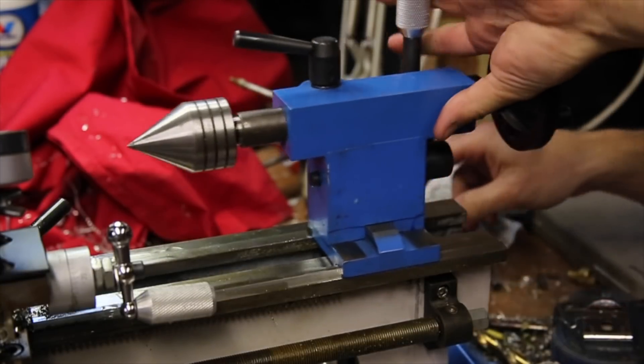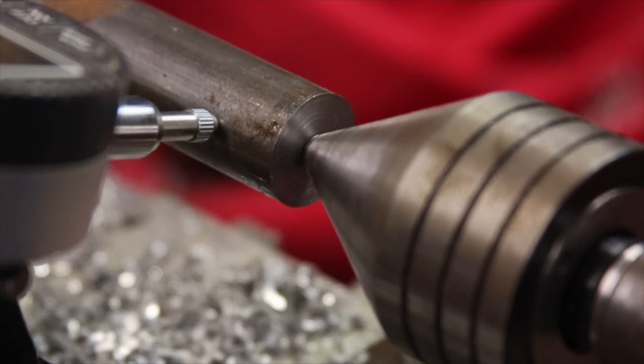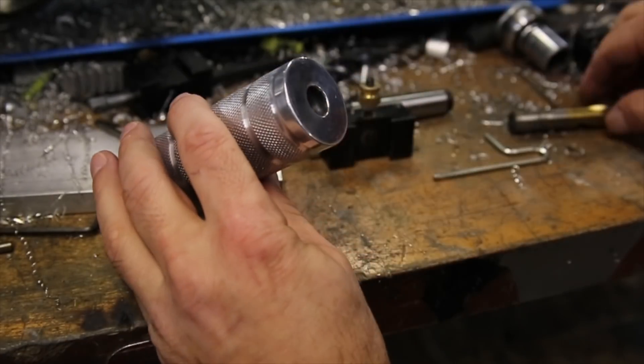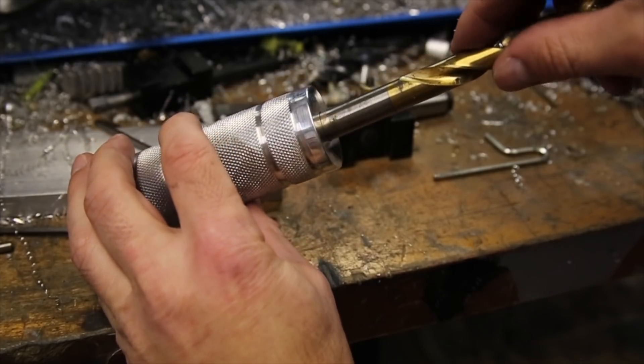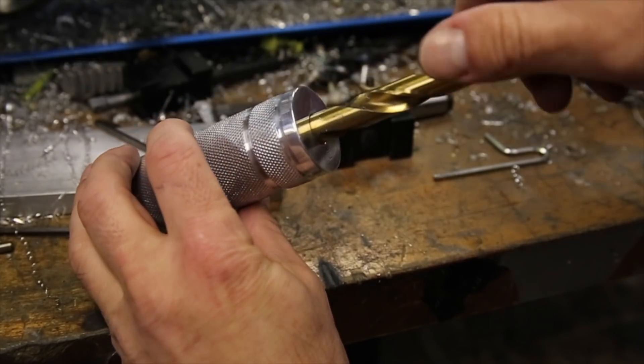Now, with the tailstock centered nicely, it's time to turn down the guide. The drill bit I used fits rather well, so I figured the diameter of the bit would be a good target.